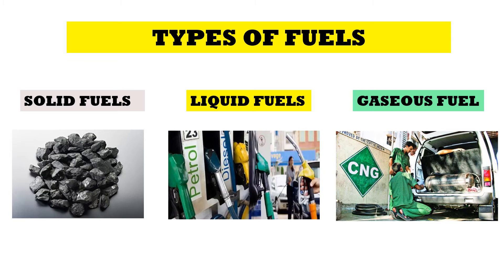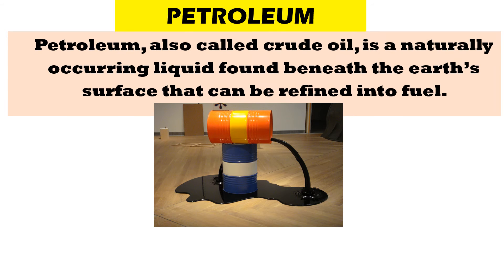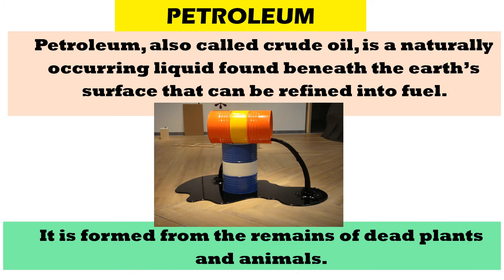From where do we get these fuels? We get these fossil fuels from petroleum. What is petroleum? Petroleum, also called crude oil, is a naturally occurring liquid found beneath the earth's surface that can be refined into fuel. It is formed from the remains of dead plants and animals.